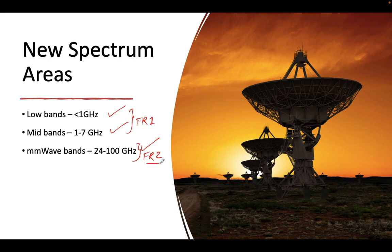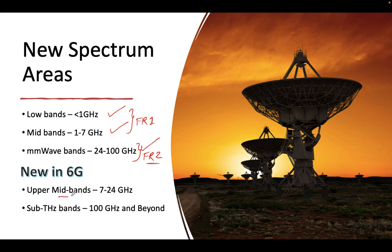We are trying to target other spectrum areas in 6G networks which include upper mid bands of 7 to 24 gigahertz, which we have not used in 5G, and sub-terahertz bands which can start from 100 gigahertz and go up to 200 or 300 gigahertz.